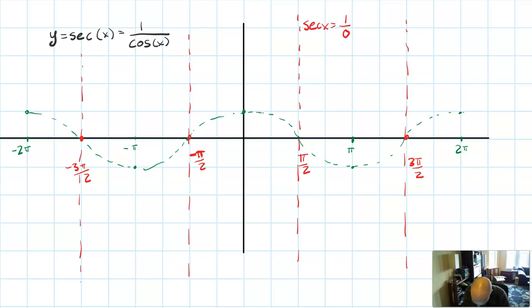So now I've got my inside cosine function. I've got my asymptotes from where the cosine is zero. Wherever the cosine is one or negative one, I know that secant of x will also equal one or negative one respectively.